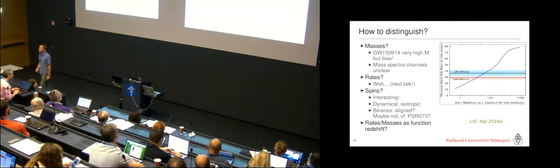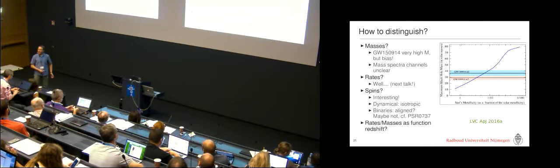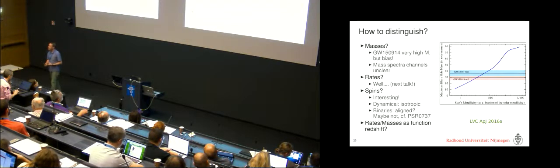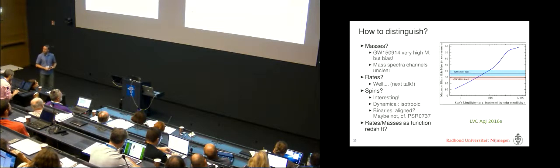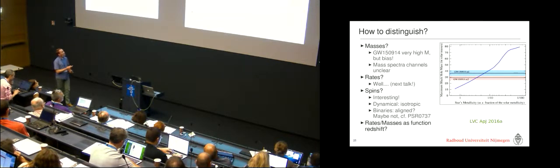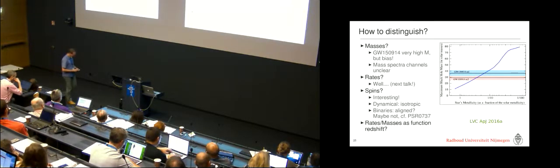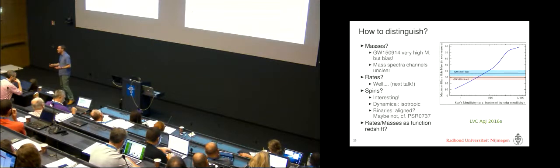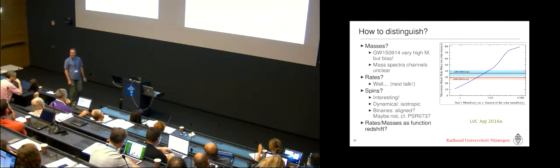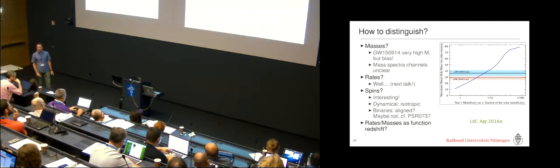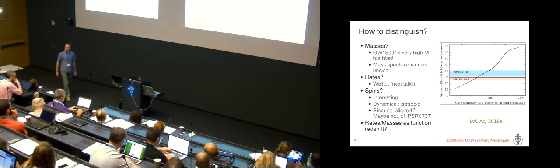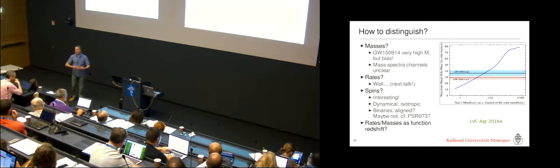Then of course there is the other way to form them in clusters or in dense environments and I won't say too much about that here I just want to list that this may not be the only way in which you can form binary black holes. So how do we distinguish between these different scenarios? Well obviously more data but there's a few things of course the masses of GW150914 were already very high and so maybe pointing to low metallicity so there's fewer little mass loss.